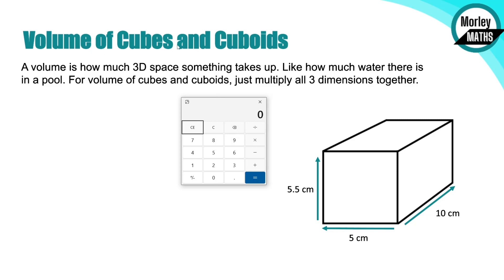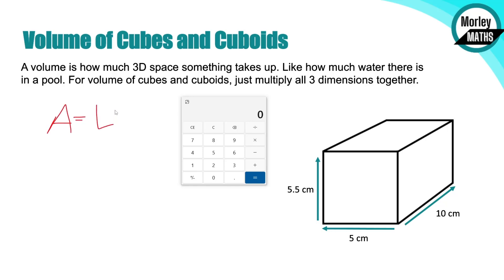With cubes and cuboids they're quite straightforward. What you want to do is multiply the three sides together - the three dimensions. For area, the formula is length times width, so that's a two-dimensional shape. With cuboids - the 3D version of a rectangle - we've got three dimensions: length, width and height. You just need to multiply those three together.